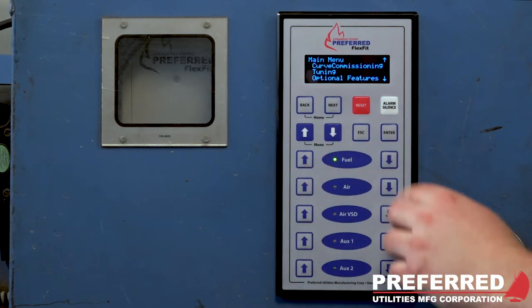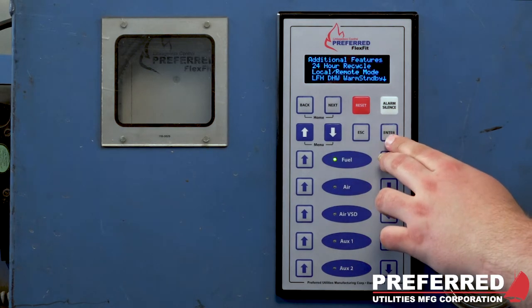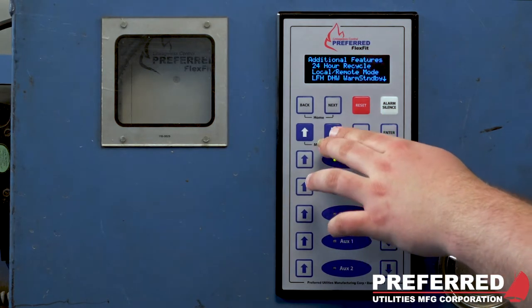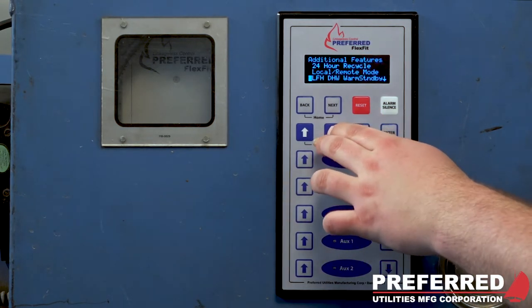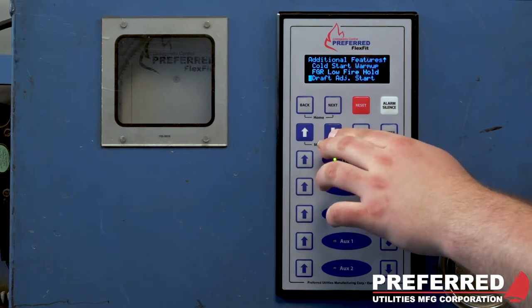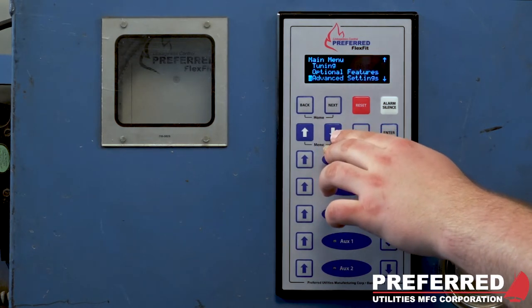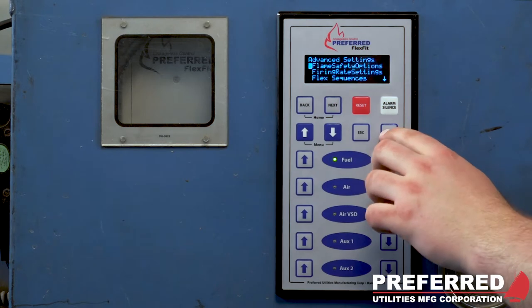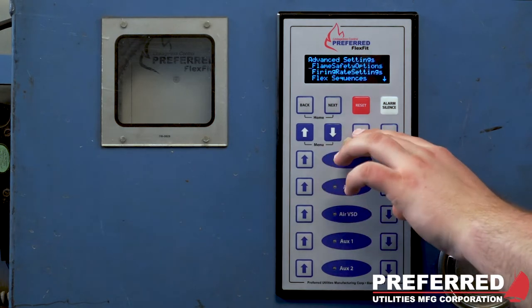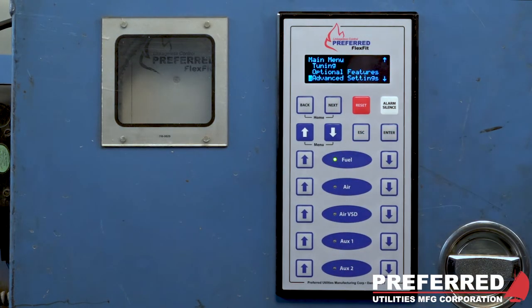Below that is more additional optional features, such as your 24-hour recycle, local remote mode, etc. And below that is even more advanced settings. And for a complete list of your optional features and advanced settings, you can reference your manual with a complete description of every setting.